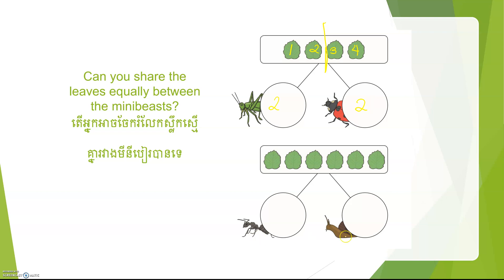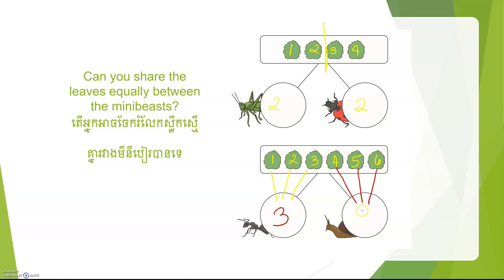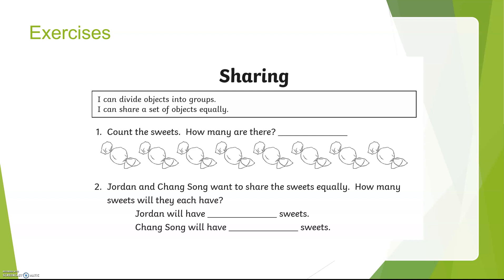How about the ant and the snail? Let's count how many leaves there are. One, two, three, four, five, six leaves. Now we are going to share these leaves equally between ant and snail. One, two, three. One, two, three. So ant got three leaves and snail got three leaves.